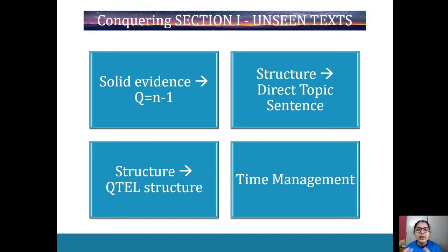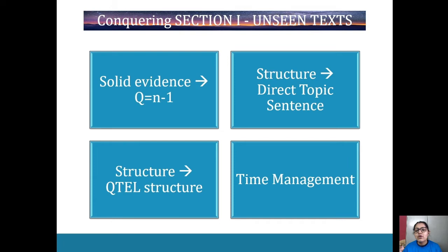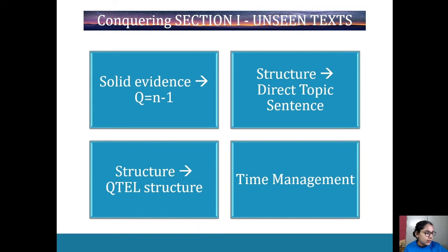You need solid evidence, and the formula for that is Q equals N minus one. Q is the number of quotes — or pieces of evidence from images — and N is the number of marks. So if I've got a three-marker, I want to have two quotes in there; if I've got a four-marker, I'm aiming for three quotes plus technique and effect. It's a general formula, but it ensures you have enough quotes. You want to aim for more quotes rather than fewer.